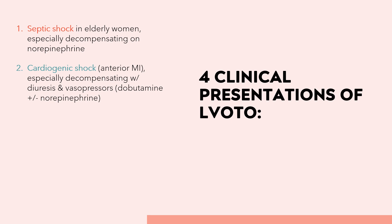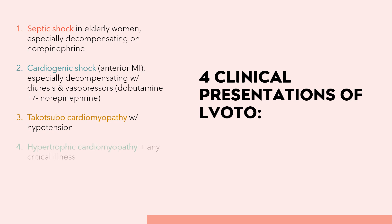Number three: Takotsubo cardiomyopathy with hypotension — approximately 25% of Takotsubo cardiomyopathy will have an LVOT obstruction. Apical hypokinesis causes an abnormal septal angle, which combined with the basal hyperkinesis causes the LVOT obstruction. Number four: hypertrophic cardiomyopathy plus any illness. Hypertrophic cardiomyopathy occurs in 1 in 500 people, and about 60% of people with hypertrophic cardiomyopathy will have some form of obstruction at baseline, so any critical illness could push them into obstruction.